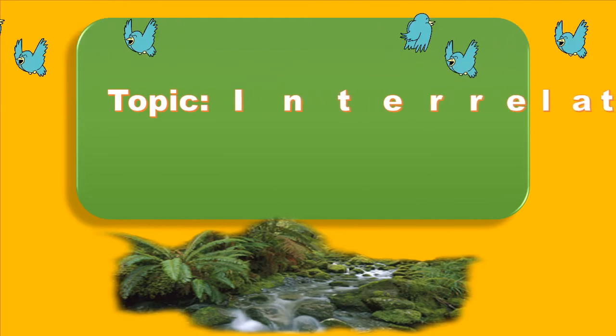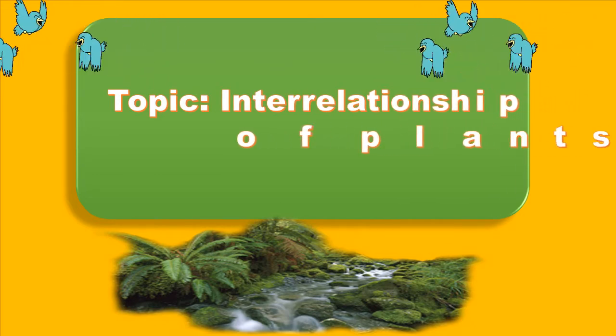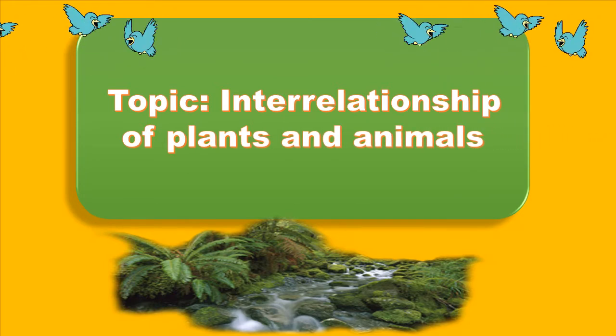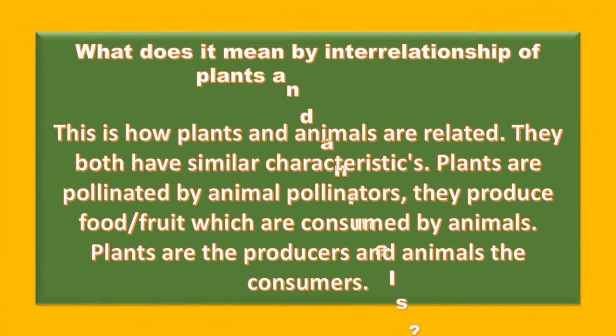Welcome to another lesson with Miss Matt. Today we're going to look at the topic: interrelationships of plants and animals. Interrelationship of plants and animals has to do with how plants and animals are related. They have similar characteristics. In order for plants to be pollinated, the pollination has to be done by animal pollinators such as bees. They produce food such as different kinds of fruits, and all those foods are then consumed by animals, for example humans.